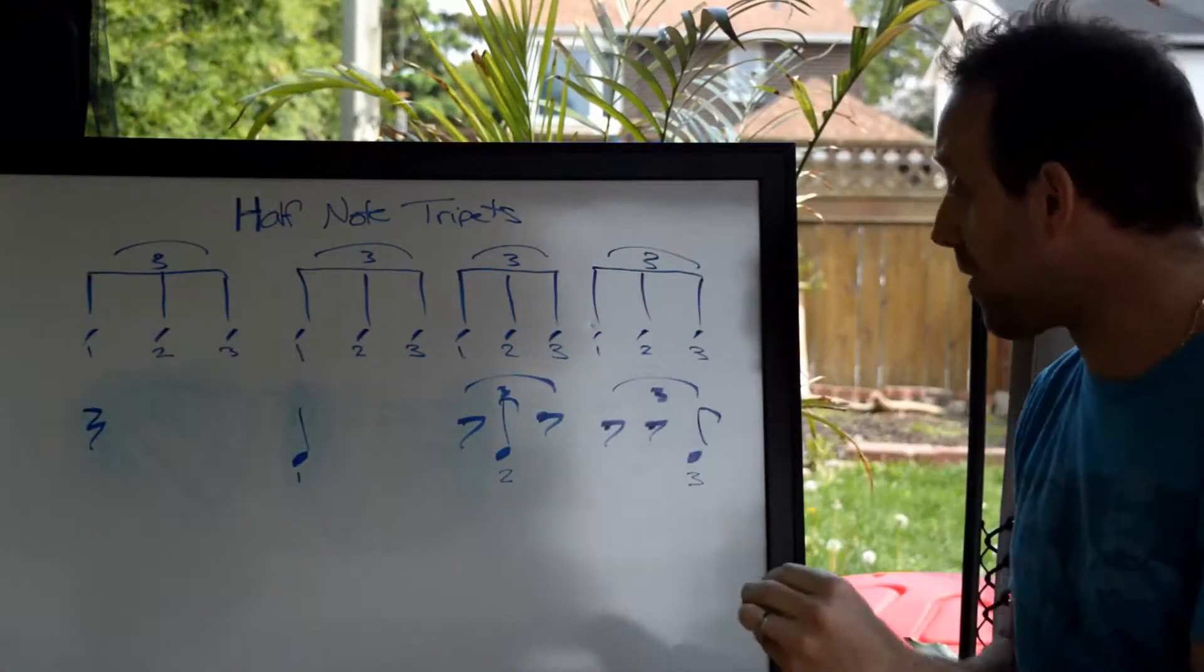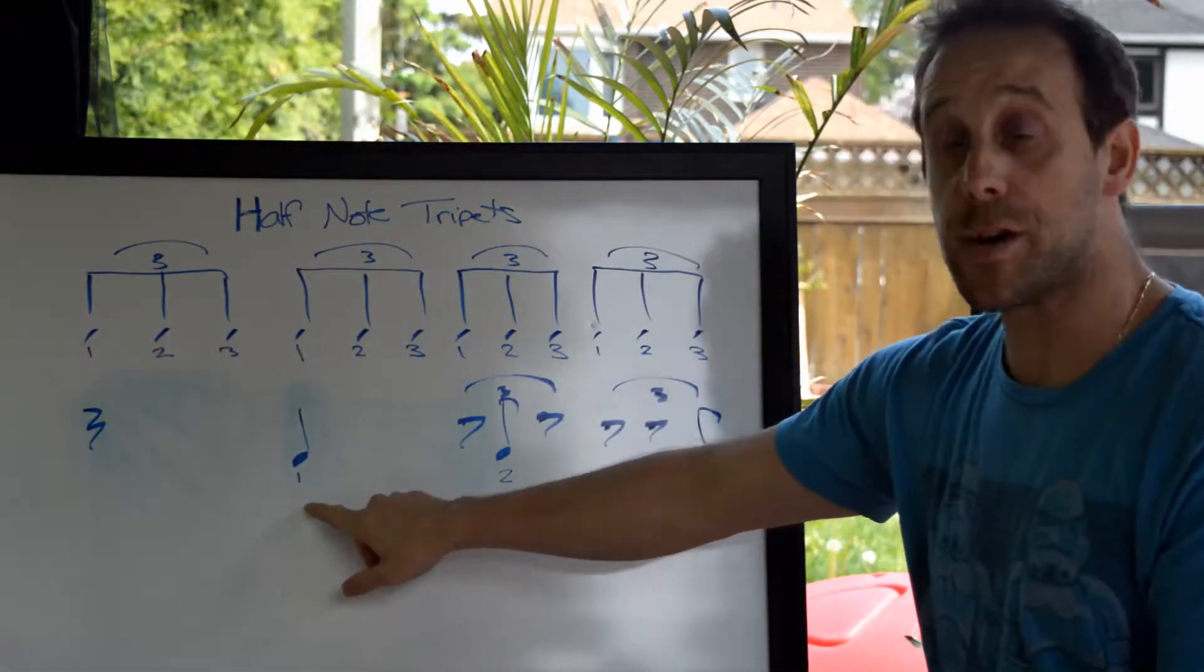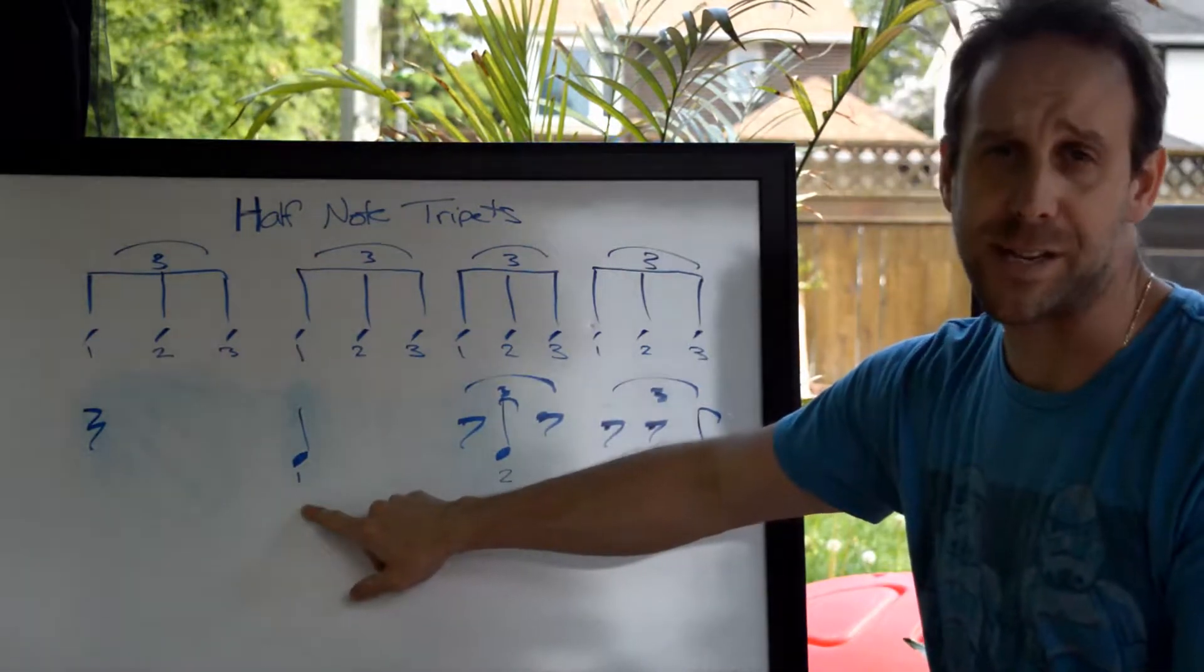So it's just a matter of getting comfortable with the partials of the triplet and understanding that it's just a pattern again. And here it's one, two, three, one, two, three, starting on beat two.